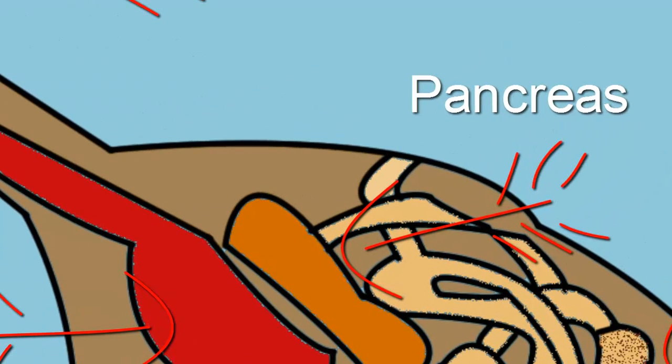The pancreas is very similar to the human pancreas. It has an endocrine function in charge of hormones and an exocrine function in charge of pancreatic juices.